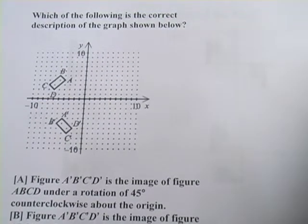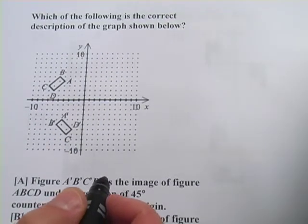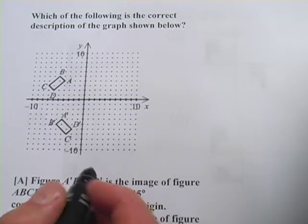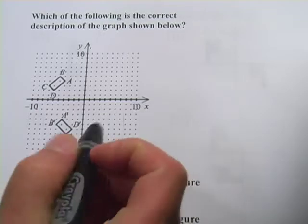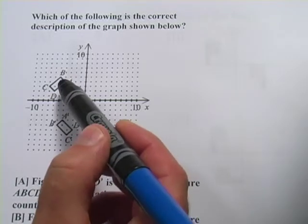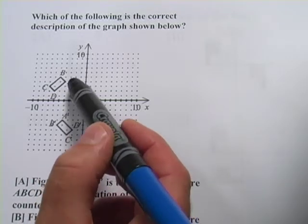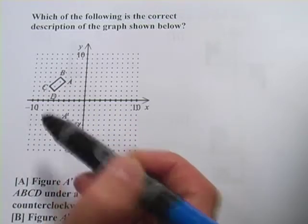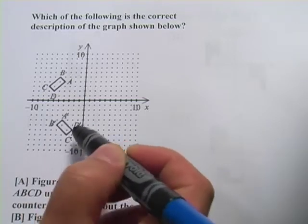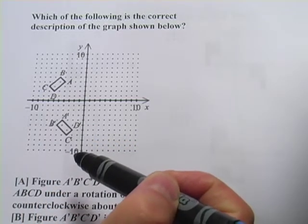Here we have a graph and it says, which of the following is the correct description of the graph shown below? And before we read these long descriptions, let's just look at it. We have a rectangle here, A, B, C, D, and then A', B', C', D'. And the question is, what has happened here?